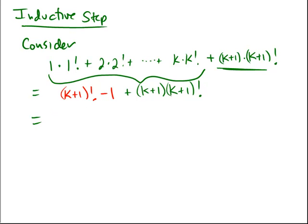What is this equal to? Well, notice, here's a k plus 1 factorial. Here's a k plus 1 factorial. So we can factor out that common k plus 1 factorial. And we'll take that minus 1 here, stick it on the end.